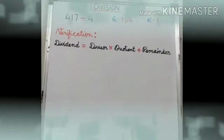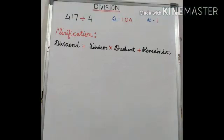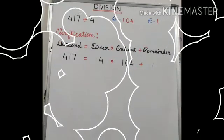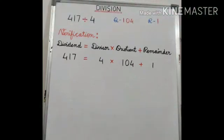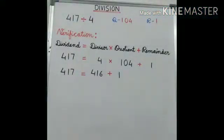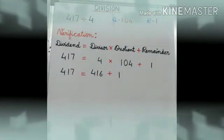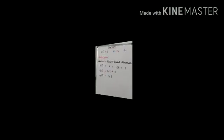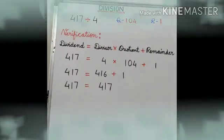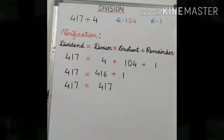Now let us verify whether our division sum is right or wrong. To verify this we have this formula: dividend is equal to divisor into quotient plus remainder. Now insert the values in it. Here our dividend is 417, divisor is 4, quotient is 104 and we have to add remainder 1 in it. First of all multiply 104 by 4 and then add 1 in that.